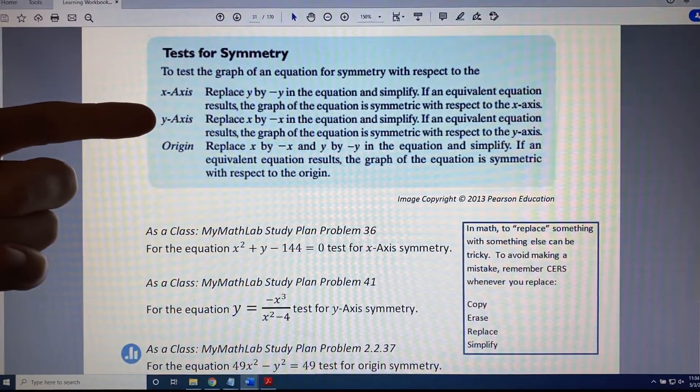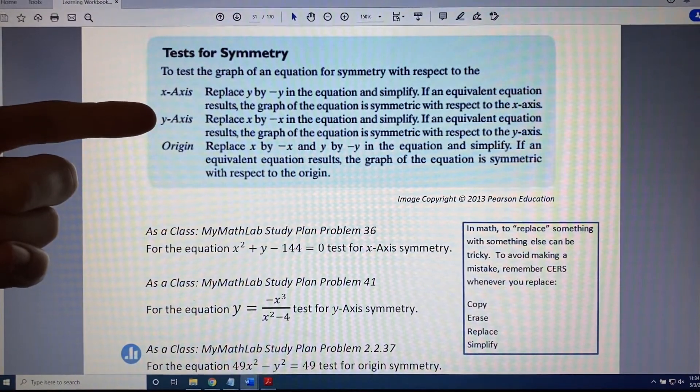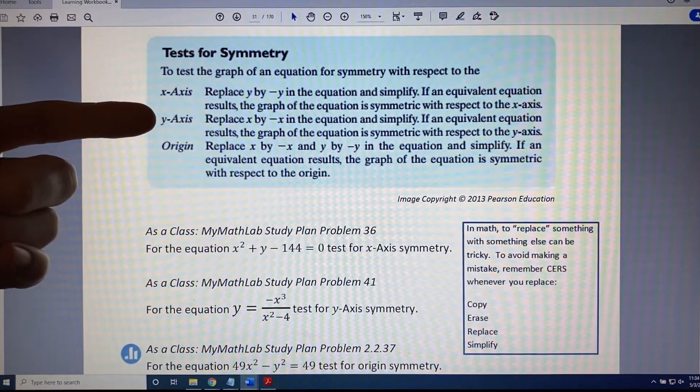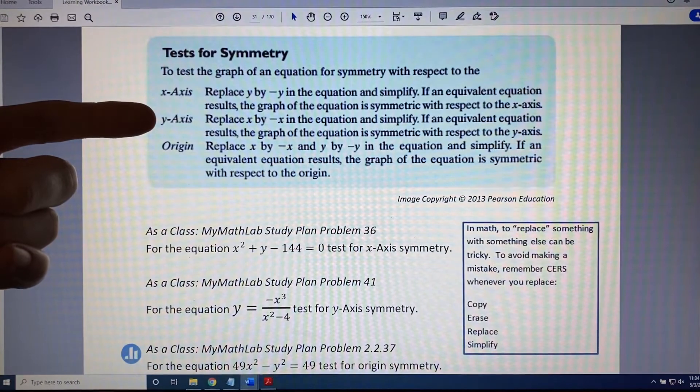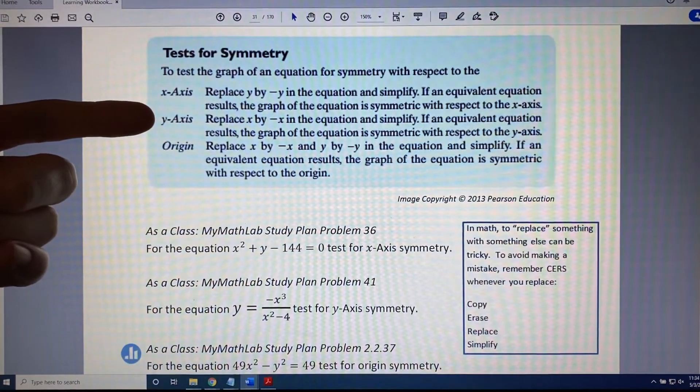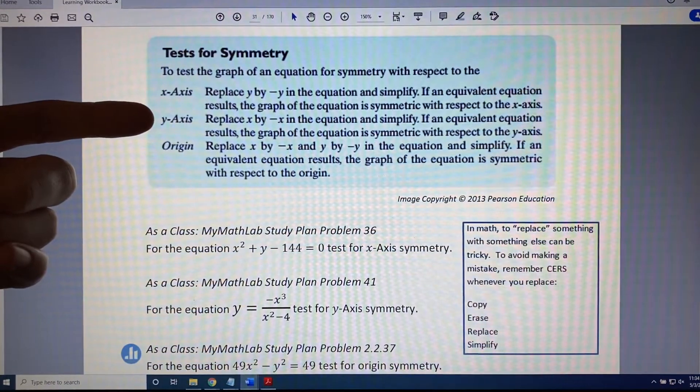To test the graph of an equation for symmetry with respect to the y-axis, replace x by negative x in the equation and simplify. If an equivalent equation results, the graph of the equation is symmetric with respect to the y-axis. If not,